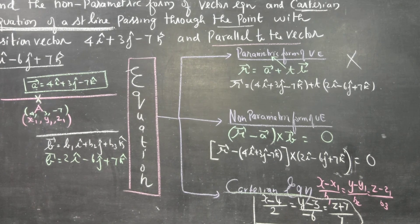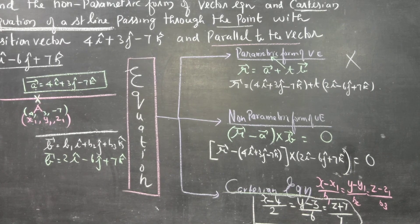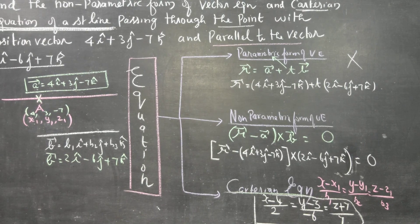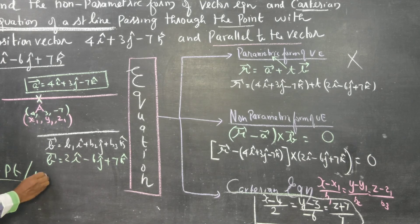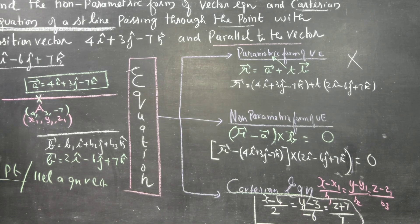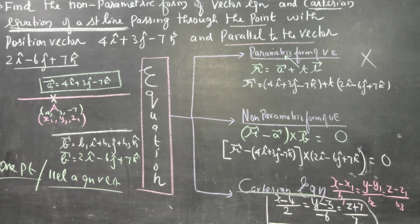So the final Cartesian equation answer is (x−4)/2 = (y−3)/(−6) = (z+7)/7. These three formulas — parametric form, non-parametric form, and Cartesian equation — are exclusively for a line passing through one point and parallel to a given vector. This formula suits only for one point and one parallel given vector. Thank you.